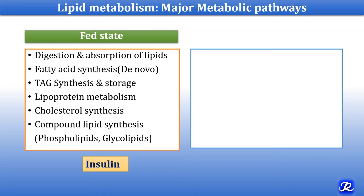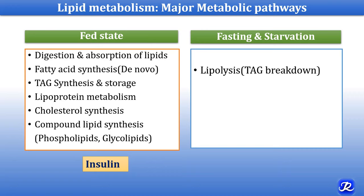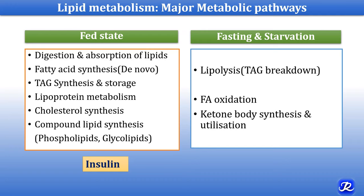Now what happens in fasting and starvation — which are the important pathways? Lipolysis. In fasting and starvation, triacylglycerol stored in adipose tissue are lipolyzed. TAG is converted into fatty acid and glycerol — that is called lipolysis. Then fatty acids undergo oxidation — fatty acid oxidation — and in starvation, ketone body synthesis and its utilization occurs. This state is governed by two important hormones: glucagon and epinephrine.